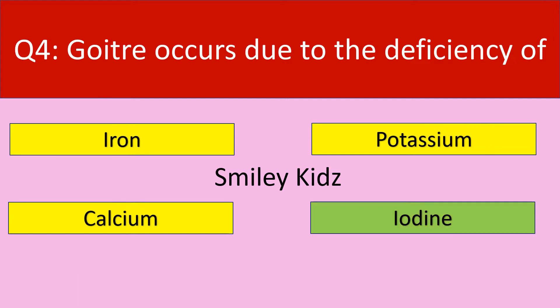The correct answer is iodine. Goiter occurs due to the deficiency of iodine.